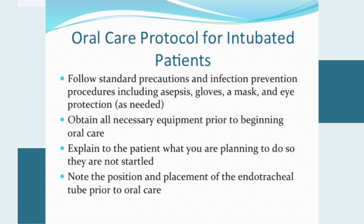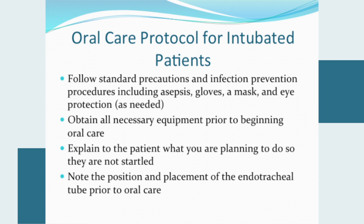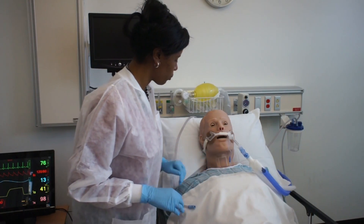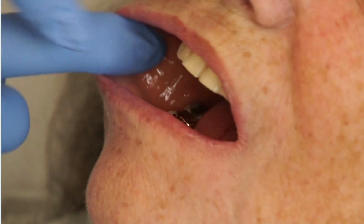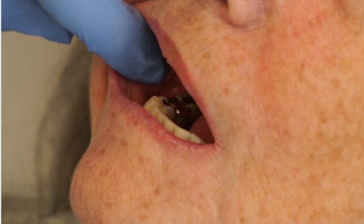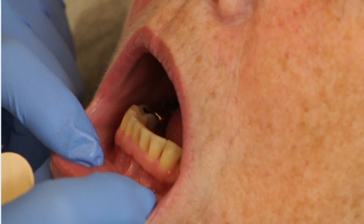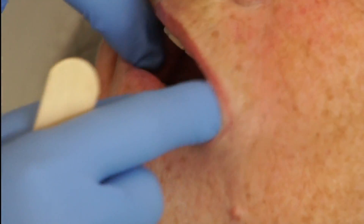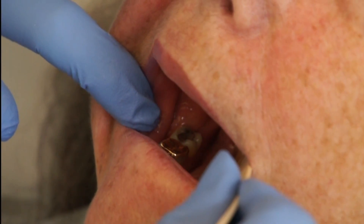When delivering oral care to the intubated patient, health care providers should follow standard precautions including gloves, a mask, and eye protection as needed. Obtain all necessary equipment prior to beginning, explain to the patient what you are planning to do so they are not startled, and note the position and placement of the endotracheal tube. Assessment of the intubated patient should include all areas of the mouth for signs of trauma, inflammation, bleeding, ulcerations, or suppuration. Redness, swelling, exudate, tenderness, and ulcerations are signs of infection and should be referred to dental professionals as appropriate. Oral health status on admission can indicate pre-hospitalization oral health; slight gum bleeding from deficient home care will typically cease within a few days of adequate oral care.